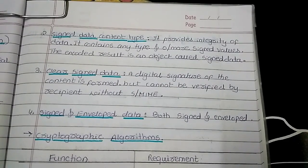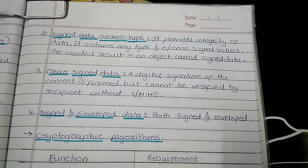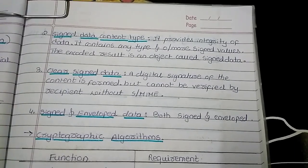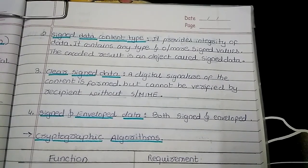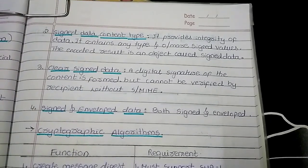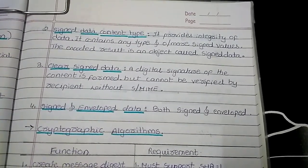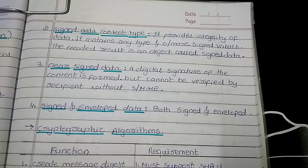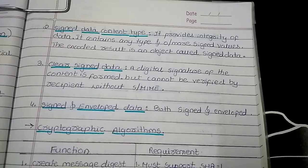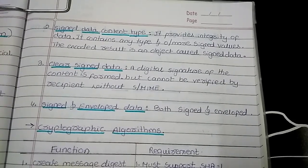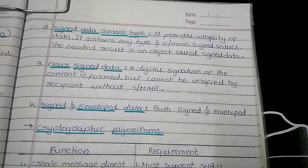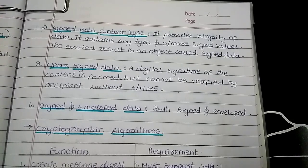Signed data content type provides integrity of data containing any type and zero or more signed values. The encoded result is an object called signed data. Then comes clear signed data, which is a digital signature of the content, but the problem is it cannot be verified by the recipient without SMIME. If the receiver wants to verify the content, they must use SMIME.